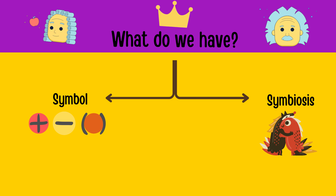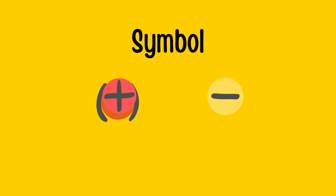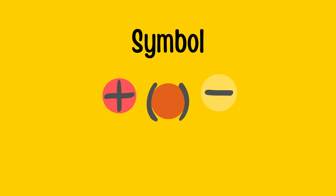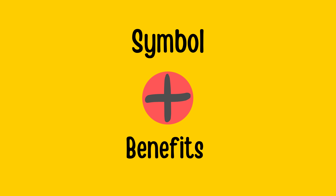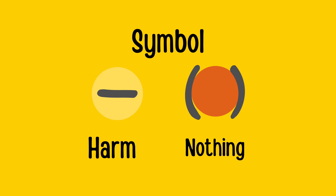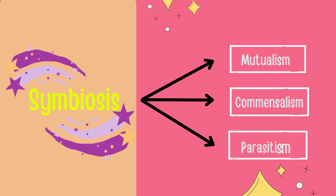Back to our main topic — what is symbiosis? Symbiosis is basically an interaction between two different organisms living in close physical association, typically to the advantage of both. What's the relation between symbiosis and symbols? These symbols are used to represent the type of symbiosis. For example, the plus symbol represents benefits gained from the interaction, while the minus symbol means harm, and the zero symbol means that somebody gets nothing from the interaction.